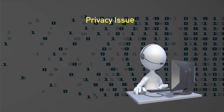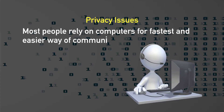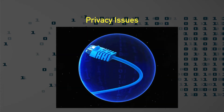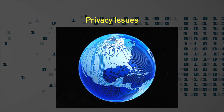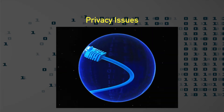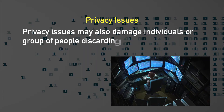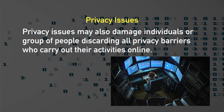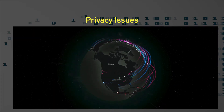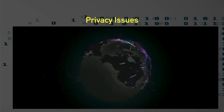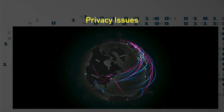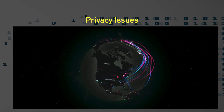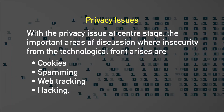Privacy issues are also a key concern. Most people rely on computers for fast and easier communication. The cyber world and its related crimes have no territorial barriers, making everything complex because evidence is very hard to collect. Privacy issues may also damage individuals or groups of people who carry out their activities totally online. The important areas of discussion are insecurity from the technological front, due to cookies, spamming, web tracking, and hacking.